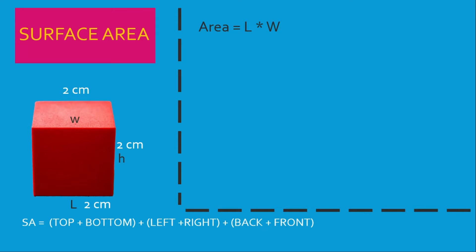The first thing we want to do in finding the surface area to volume ratio is to find the surface area of the object. Here it's a cube, so I want to pay attention to the sides. The cube has six sides — it has a top and a bottom, a left and a right, and also a back and a front based on where you're standing. Each side of this cube measures two centimeters.